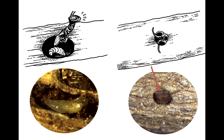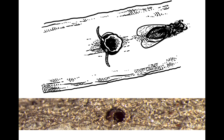The parasitoid consumes the host body and undergoes development in the crypt. When the parasitoid is done with its development, it chews a hole through the host head and emerges to go off and find a mate. Here is a gaping hole in the host head from which the parasitoid has emerged.